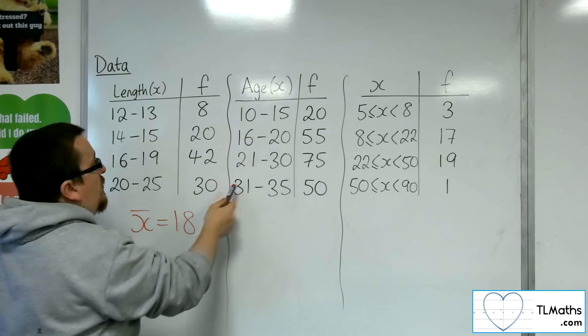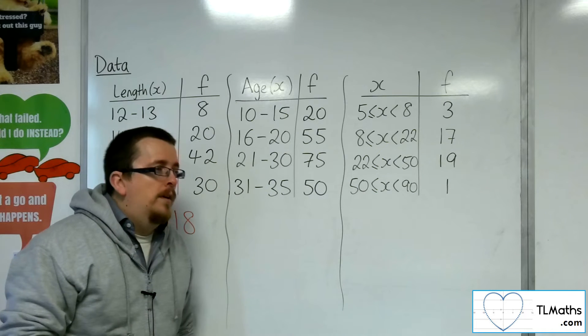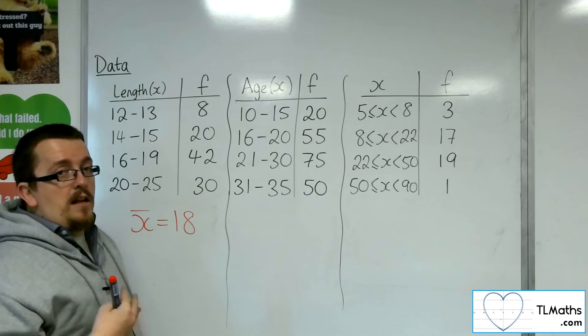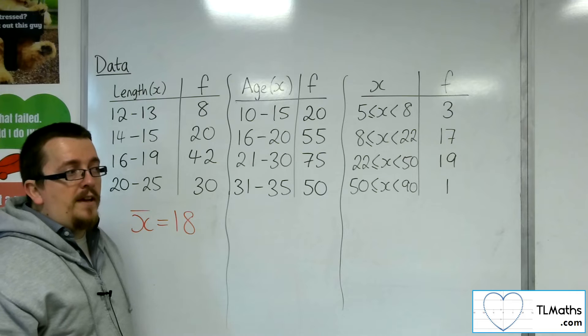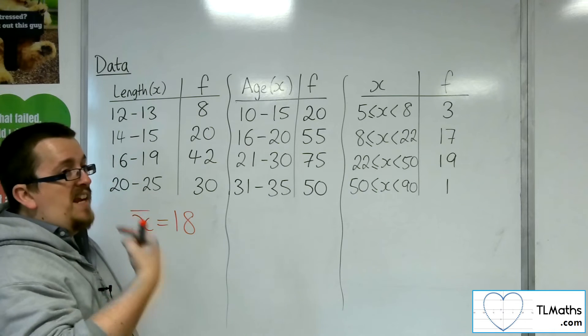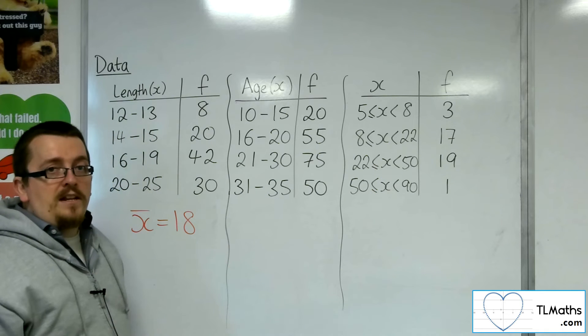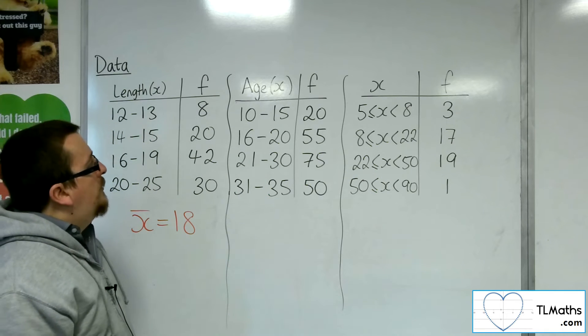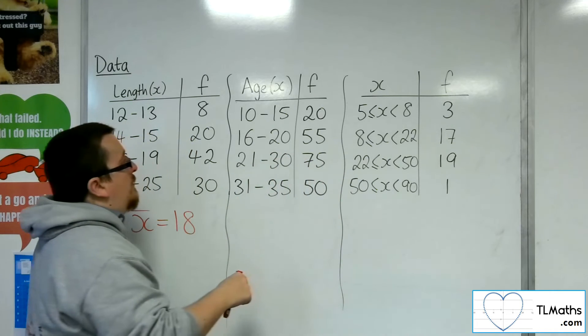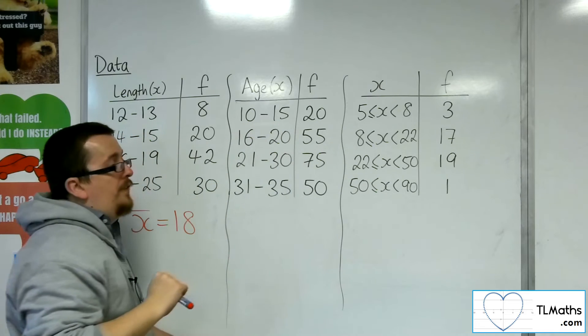The context matters here. With age, you're not said to be 16 until you are 16, until you've reached your 16th birthday. We don't round up. So if you are 15.9 years old, you're not then 16 years old. With age, you always round down.